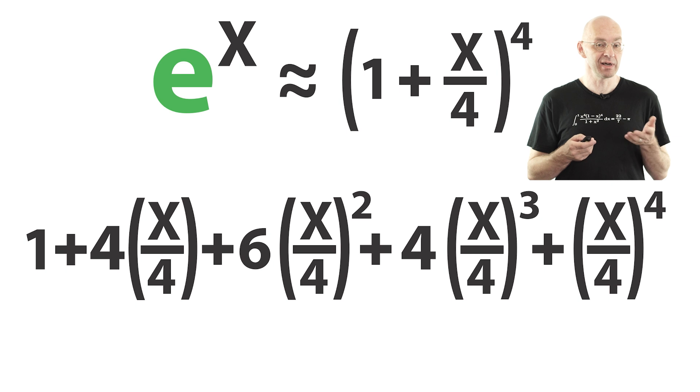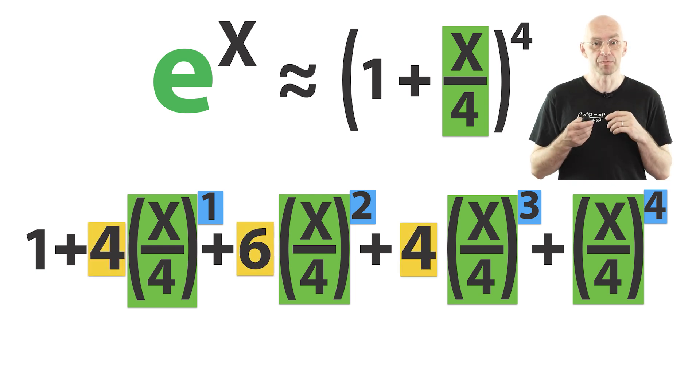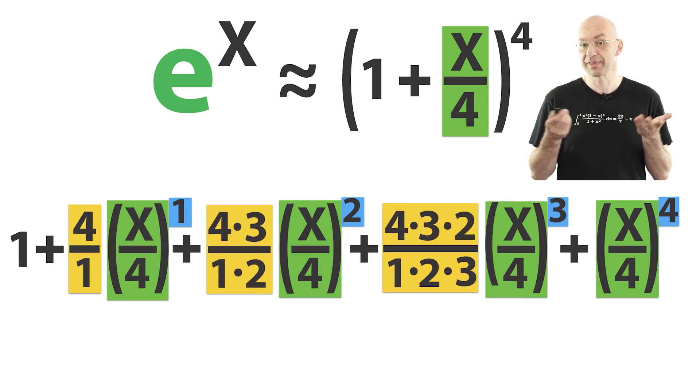A couple of patterns are emerging, right? In terms of the green and blue bits it's clear how this continues. What about those other numbers? Well there's also a pattern and I'm sure many of you will be familiar with it from school. These are binomial coefficients and can be written like this. We've got our pattern right there.